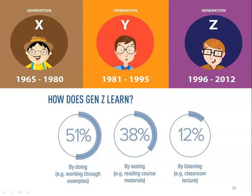To be an effective teacher, we have to understand how Generation Z learns. They learn 12% by listening — that is, listening to classroom lectures; 38% by seeing — reading course material, watching videos, and PPT; and 51% by doing. So 51% of their learning comes from doing something, working through examples.